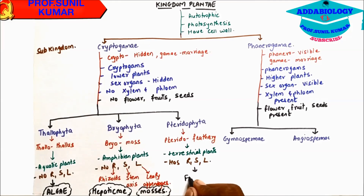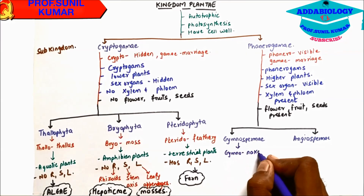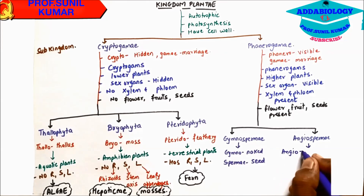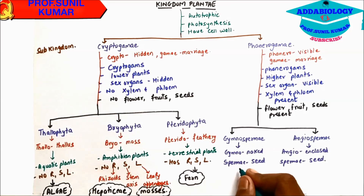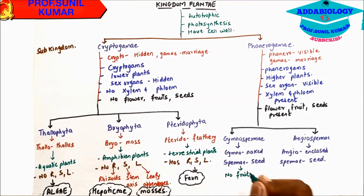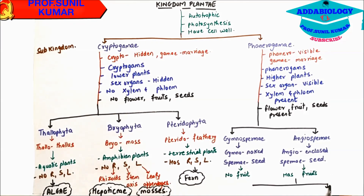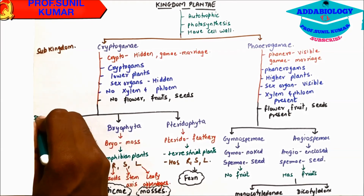Phanerogamae includes Gymnospermae. The word Gymno means naked and Sperma means seed. In Angiospermae, Angio means enclosed and Sperma means seed. In Gymnospermae there is no fruit, while in Angiospermae they have fruit and seeds are present inside the fruits. Angiospermae includes two classes: Monocotyledon and Dicotyledon. These are the sketches of Kingdom Plantae.